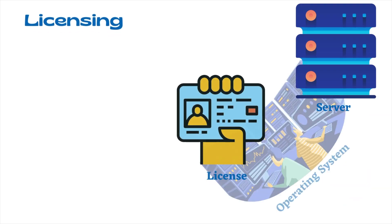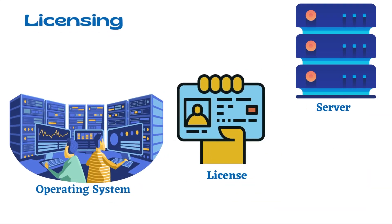Second comes licensing. If you are running any operating system, the organization will require licenses as well. Each operating system installed on a server might have its own license cost. Operating system and software licenses are typically sold per server or per client access license. As companies grow, licensing arrangements become more restrictive.